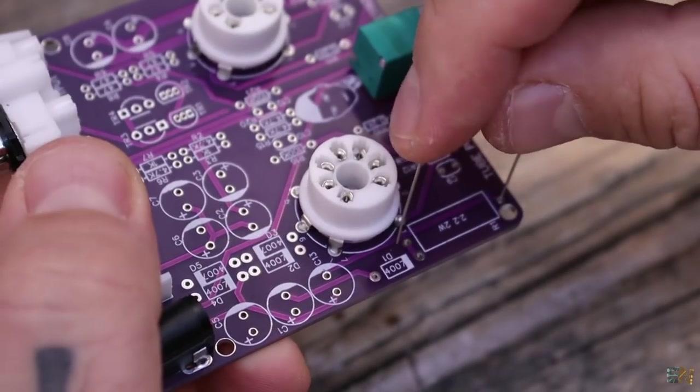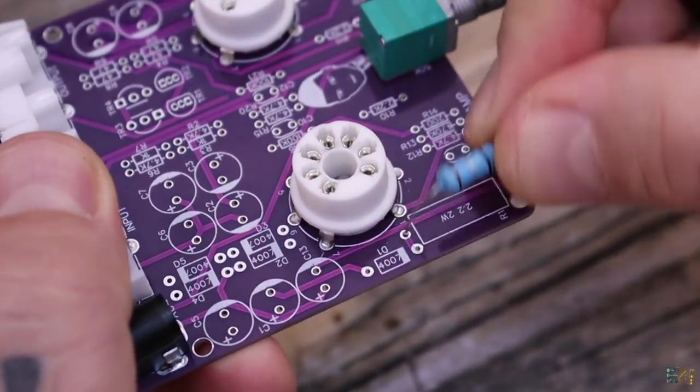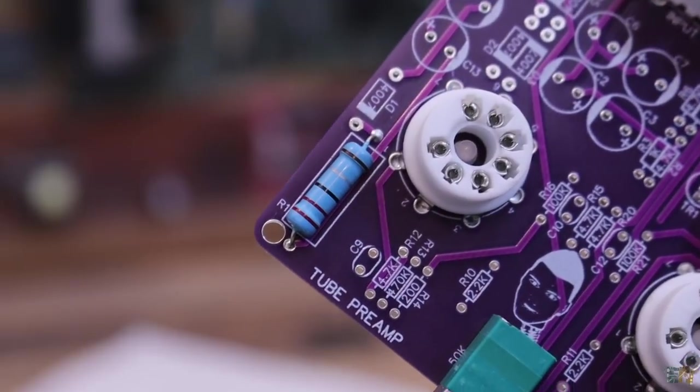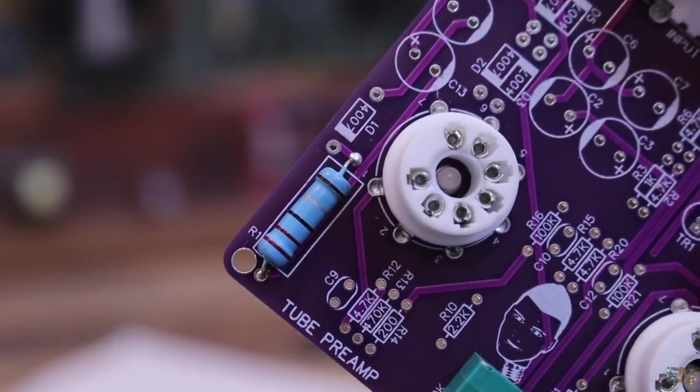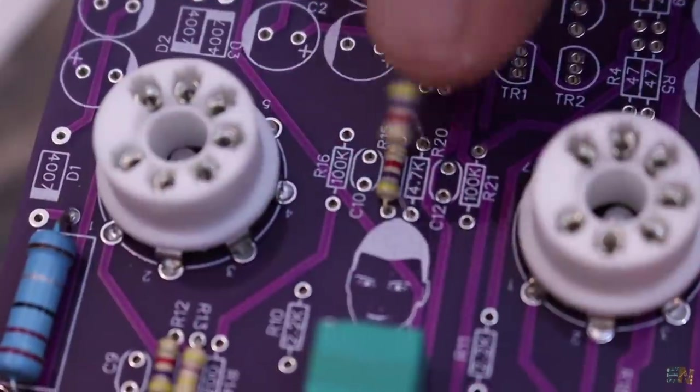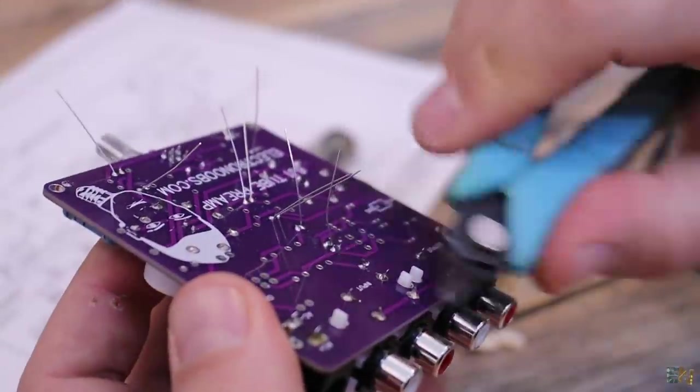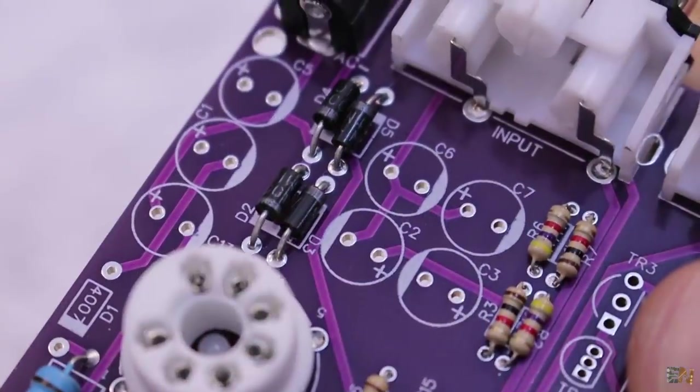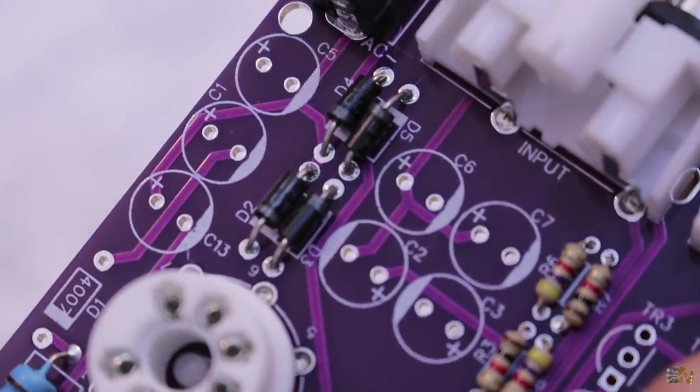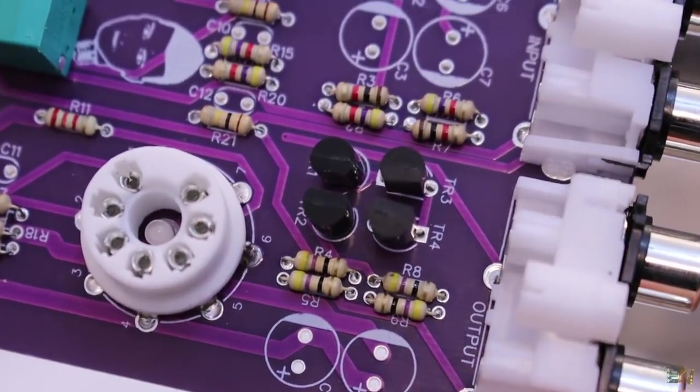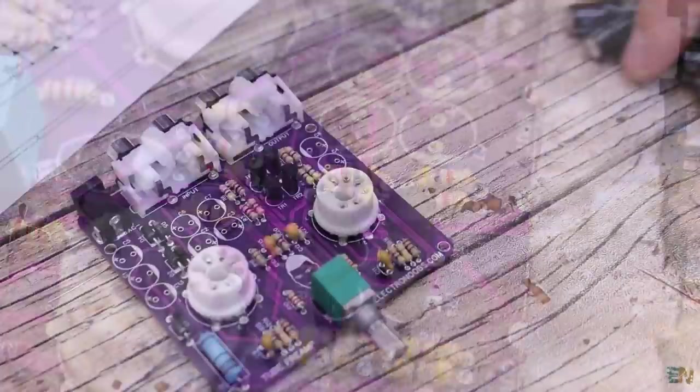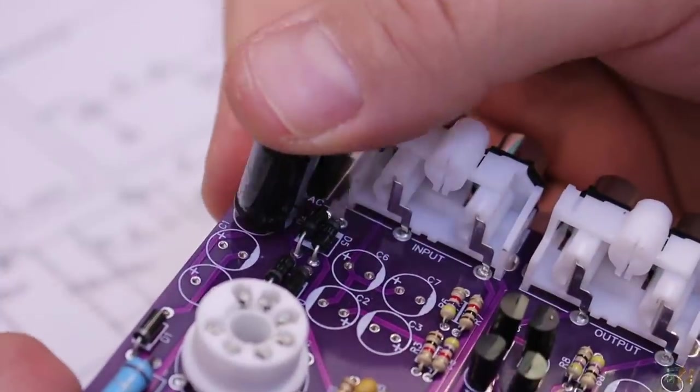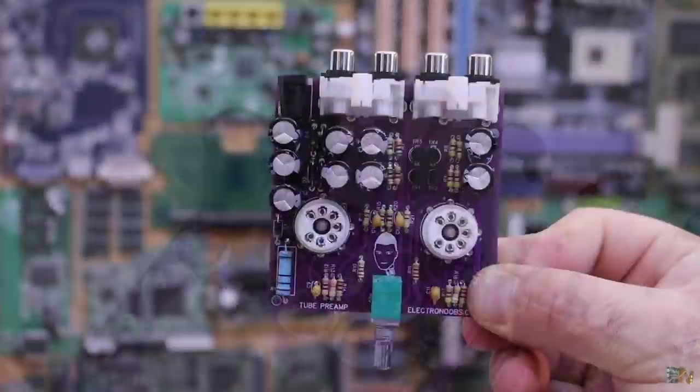I add the power resistor for the heating filaments of the tubes, and this must be a power resistor of at least 2W. I add the rest of the small resistors. Finally, I add the diodes and BJT transistors, and make sure you don't solder them backwards. The last components to be soldered are the capacitors, and in my case, they are a bit too big but they will still work.